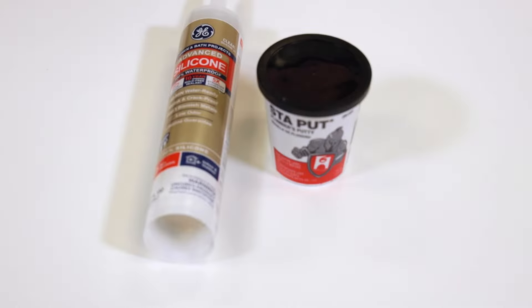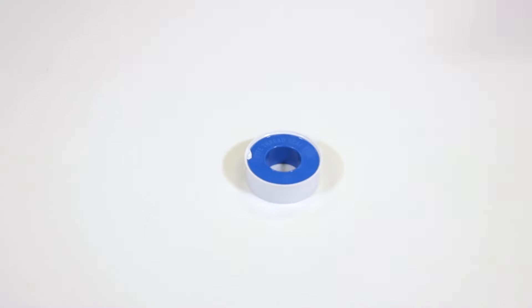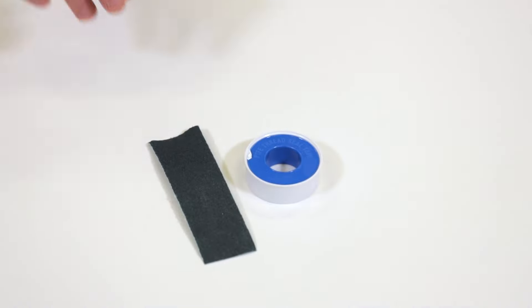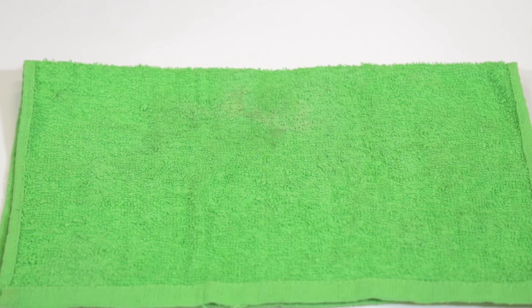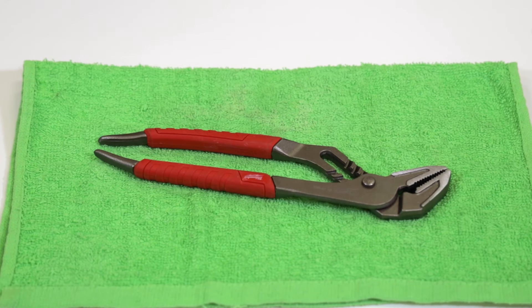As always we'll start with the tools and supplies. You really only need a few things: Plumber's putty or silicone depending on your sink material, Teflon tape, and a small piece of sandpaper or emery cloth. For tools you'll just need a good pair of plumbing pliers that are large enough to grip the drain nut and some rags or paper towels.